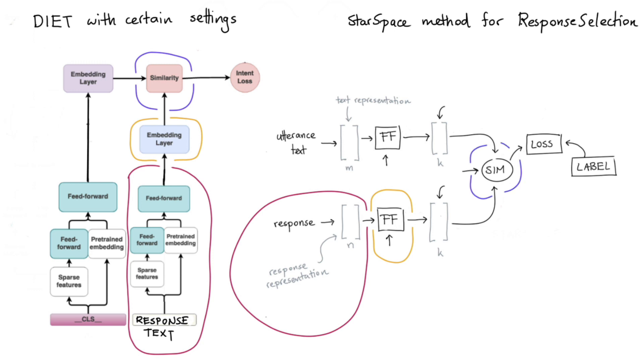And I hope that it's now somewhat more evident that we can implement StarSpace for response selection using DIET as the backend. By setting hyperparameters the right way, we can reuse our DIET architecture to also be used in this use case.